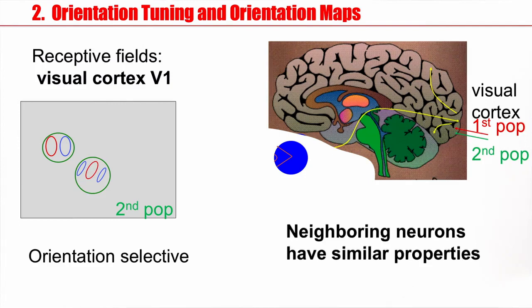So overall, the message here is that neighboring neurons have similar properties. And that's why it makes sense to talk about a population of cells. A population of neighboring cells will respond similarly to a stimulus.